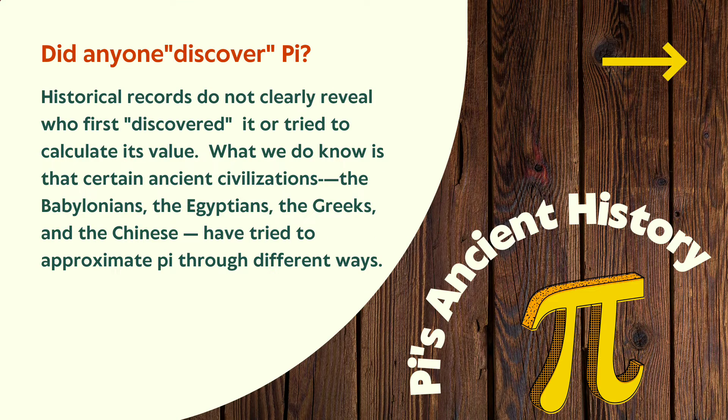Now let's talk about its ancient history. Did anyone discover pi? Historical records do not clearly reveal who first discovered it or tried to calculate its value. What we do know is that certain ancient civilizations—the Babylonians, the Egyptians, the Greeks, and Chinese—have tried to approximate pi through different ways.